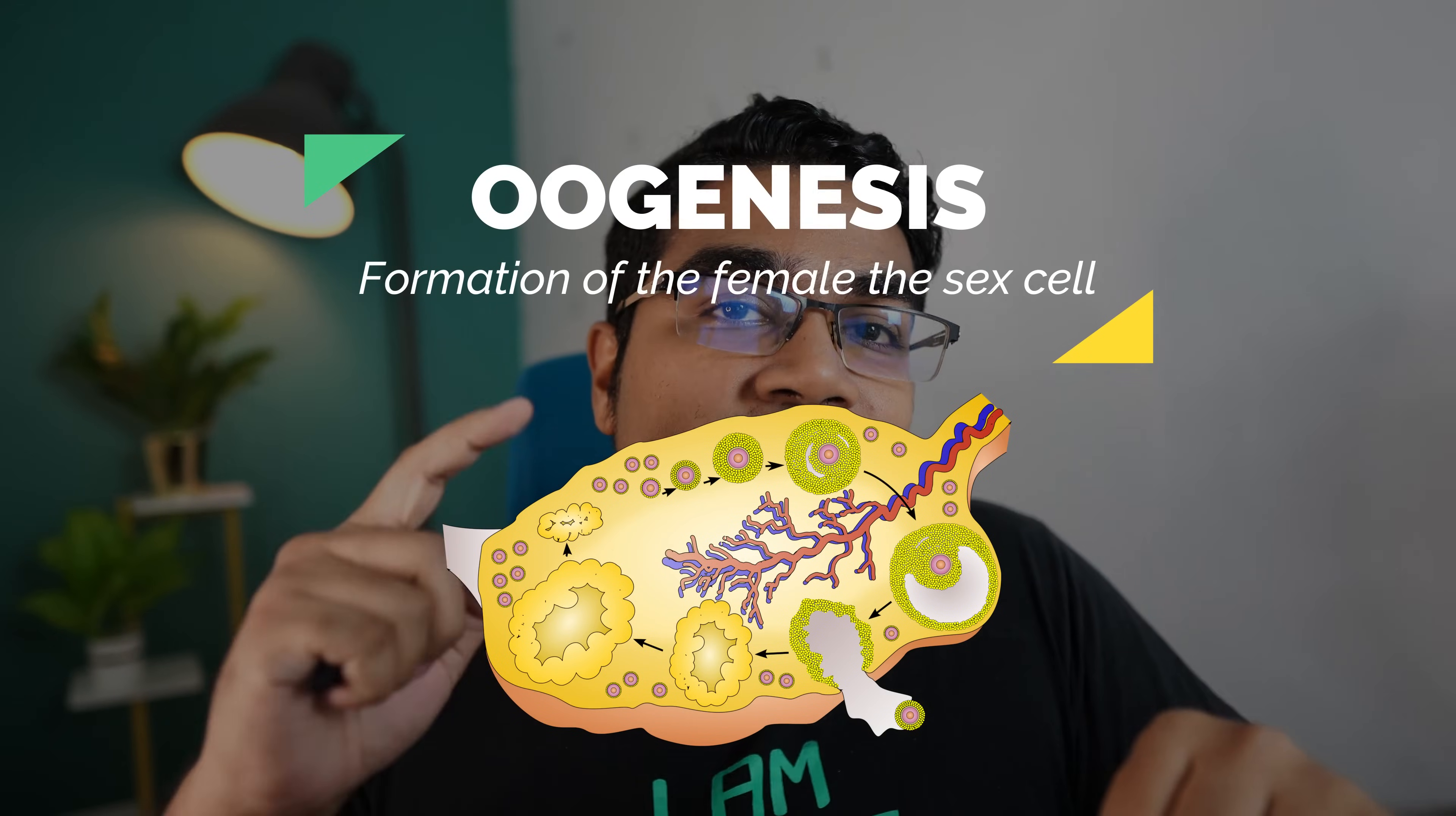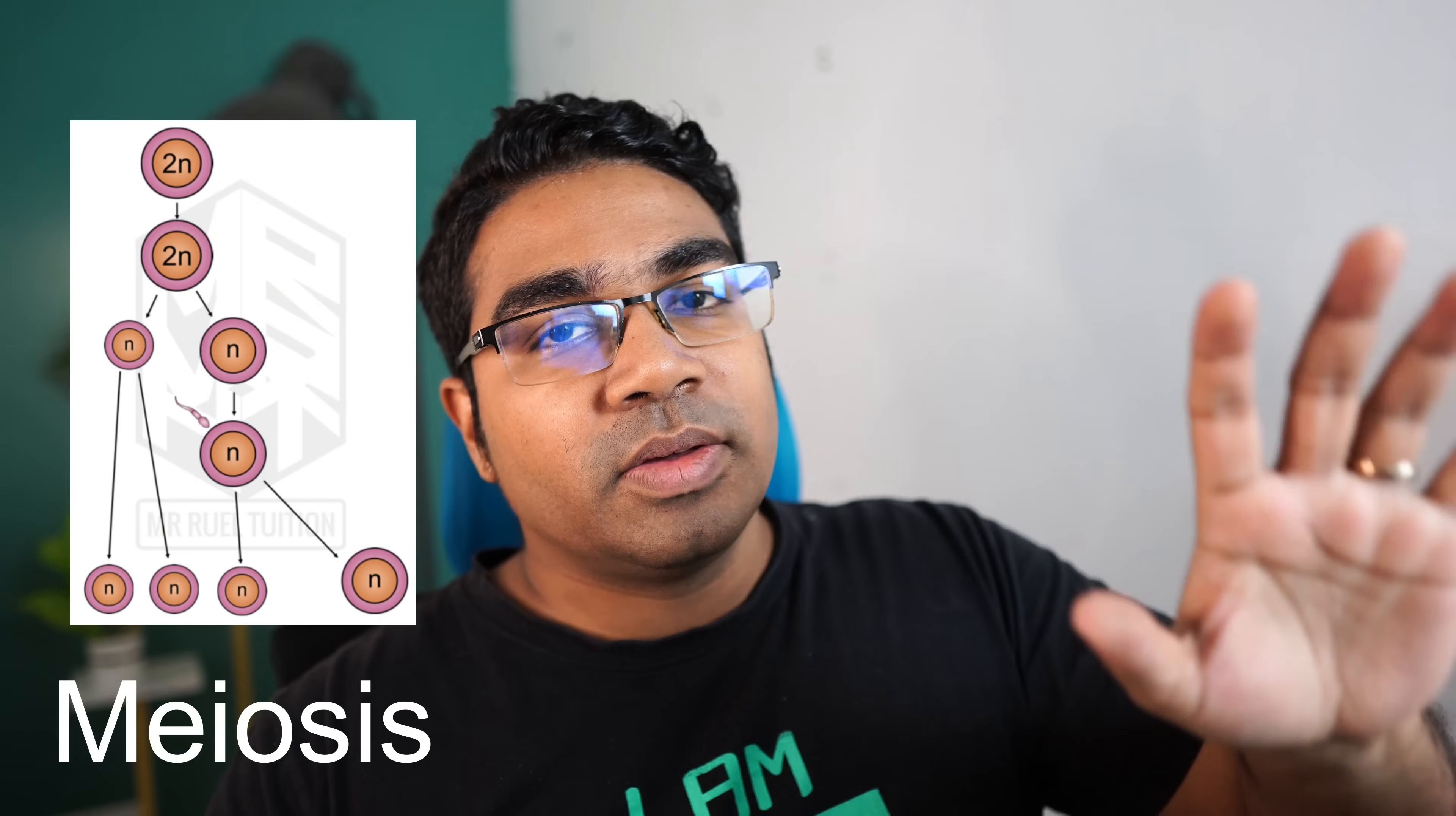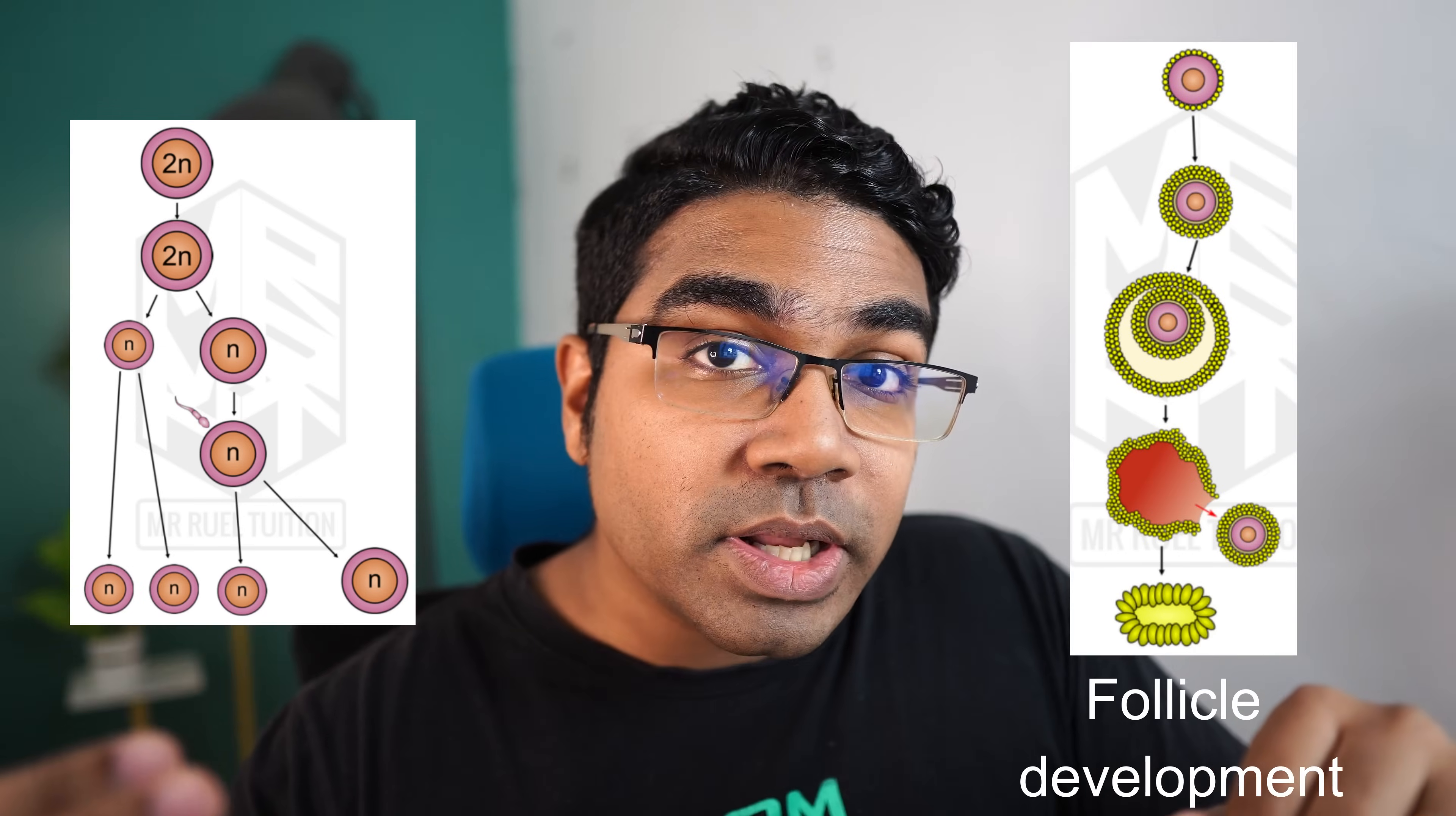Oogenesis is the formation of the female sex cell or the female gamete. Oogenesis consists of two events that are happening at the same time. The first event is the meiotic event where meiosis takes place, meiosis 1 and 2. The second event that occurs at the same time is the development of the follicle.